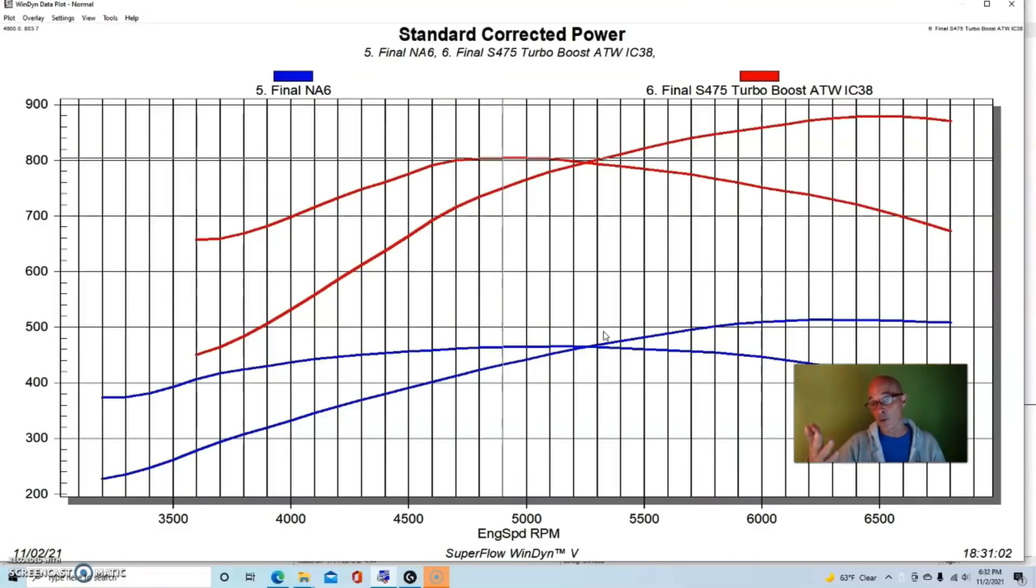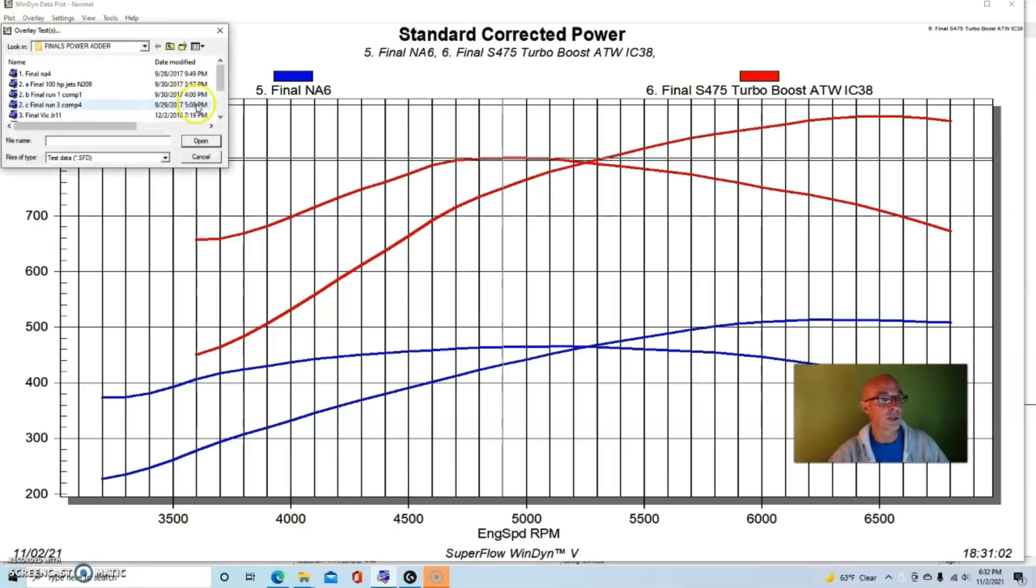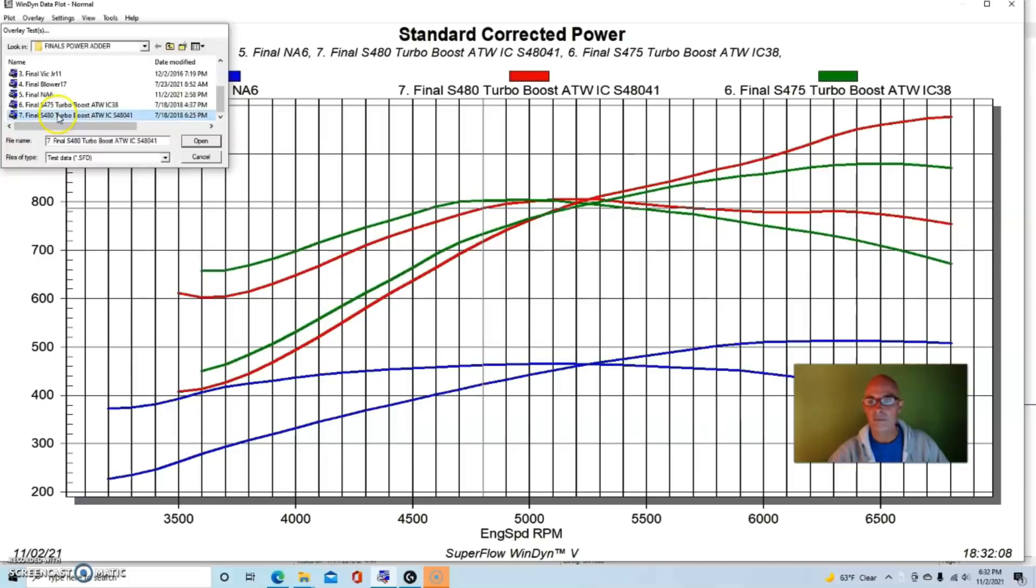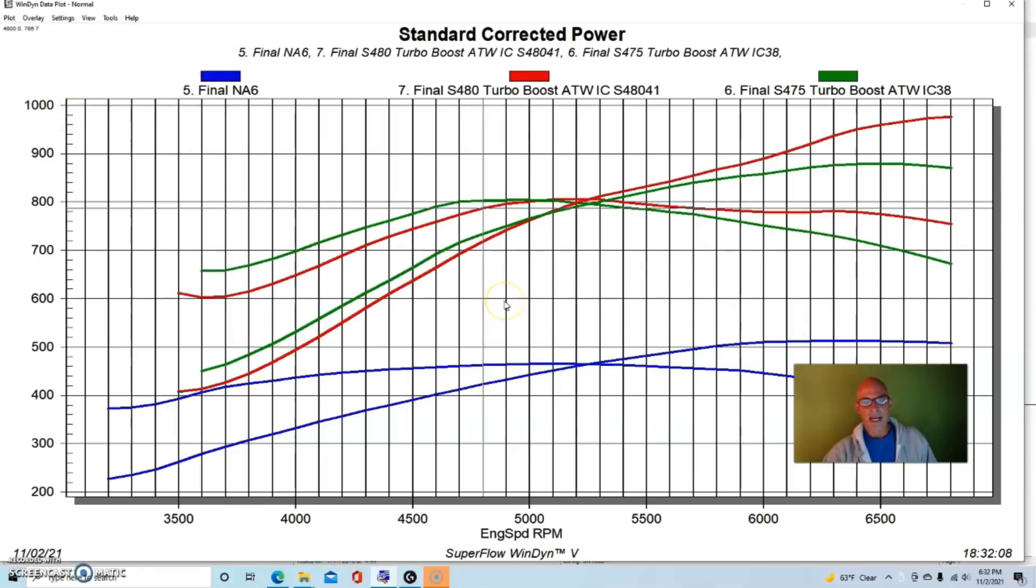We ended up comparing an S475 to an S480. Neither one of the turbos were the way that guys normally get them. Usually they're T6s. Both of these were T4s so they would be unusual. The other thing that happened is, this is our S480. Now the S480 did something cool and it was somewhat expected. It made less power down low, so maybe less responsive from the bigger turbo, we might expect that, and made more power at the top.